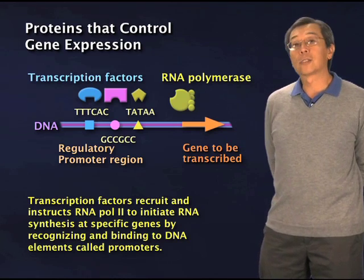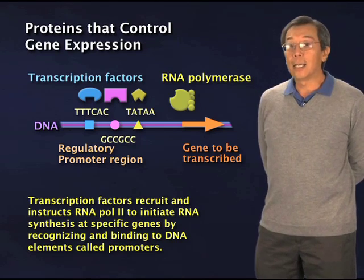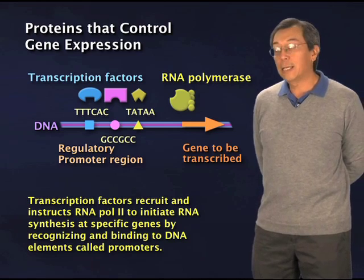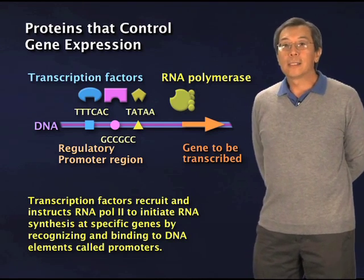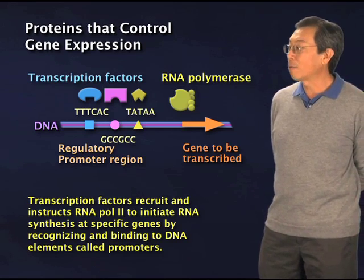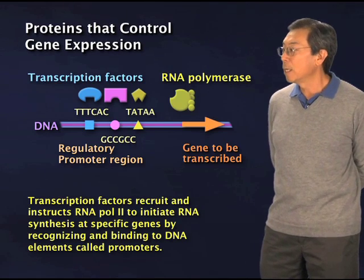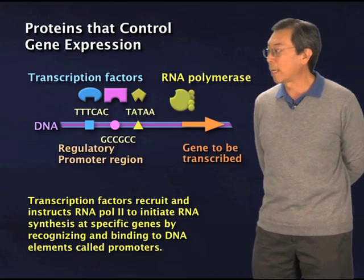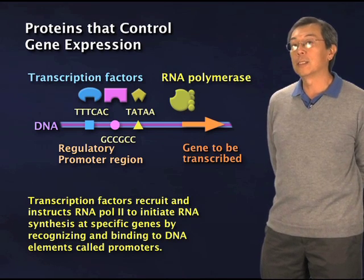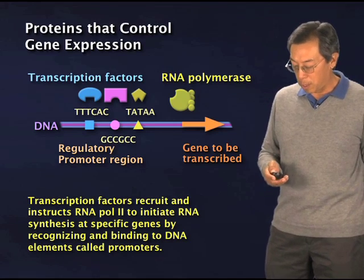The other component of this — let's call it the transcriptional apparatus — is, of course, the enzyme that catalyzes RNA synthesis. This enzyme, on its own, can't tell the difference between random DNA sequence and a gene or a promoter. These other sequence-specific DNA binding proteins are the ones that must recruit or otherwise direct RNA polymerase to land on the right place at the right time in the genome, to turn on a certain subset of genes specifically required in a specialized cell type.